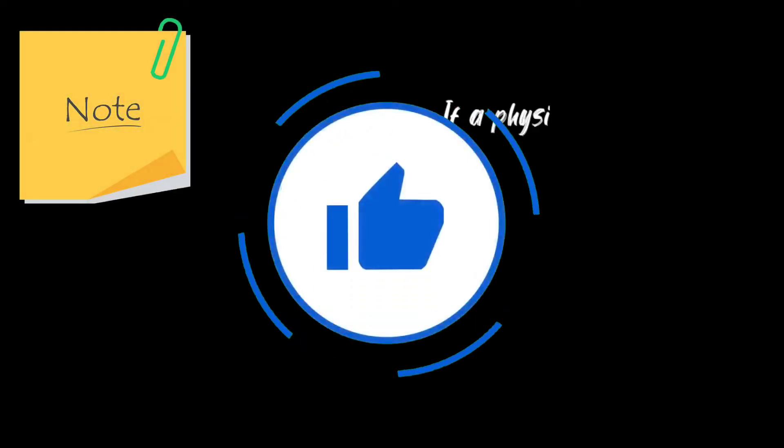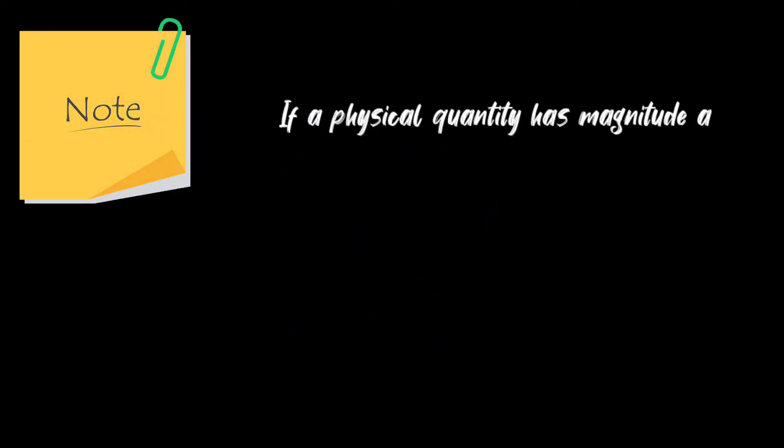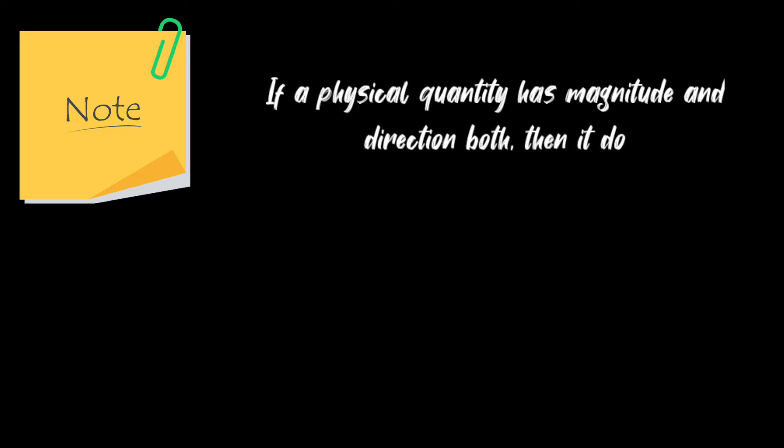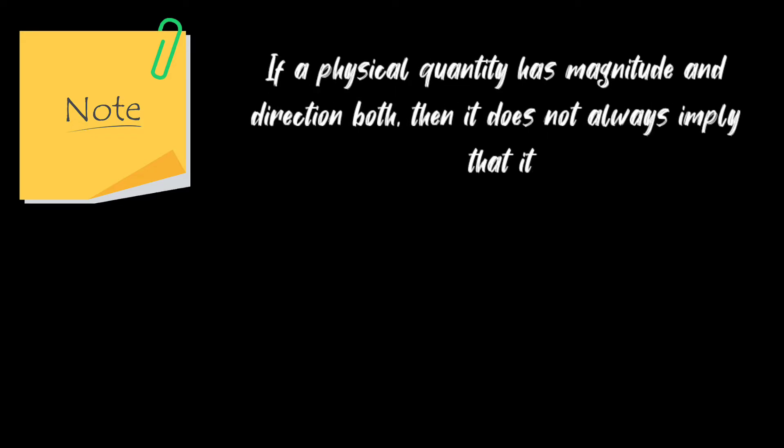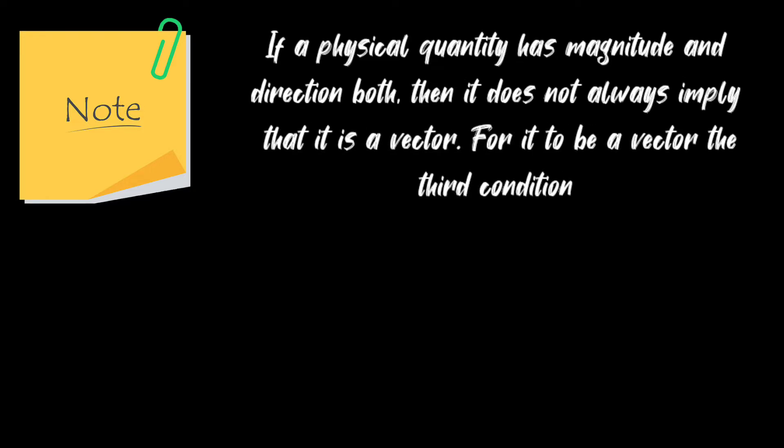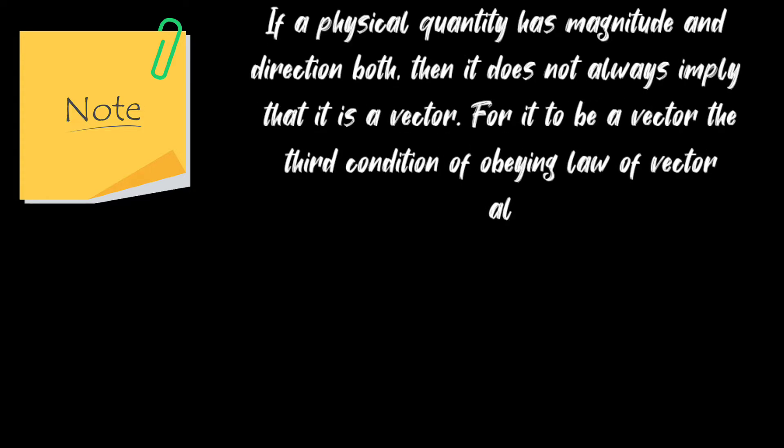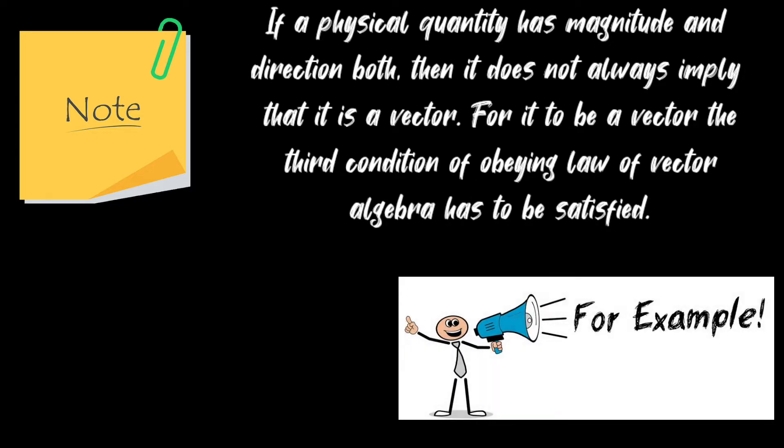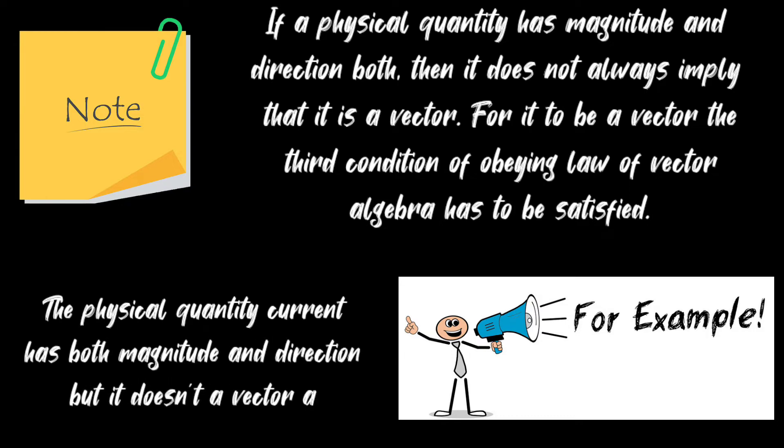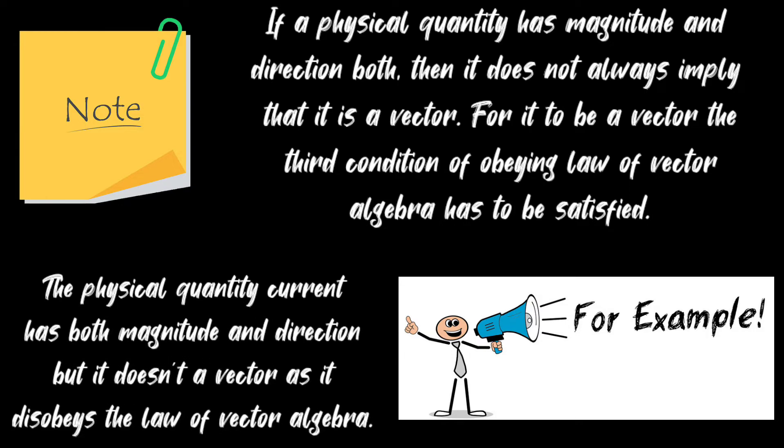Note: if a physical quantity has magnitude and direction both, then it does not always imply that it is a vector. For it to be a vector, the third condition of obeying the law of vector algebra has to be satisfied. For example, the physical quantity current has both magnitude and direction, but it is not a vector as it disobeys the law of vector algebra.